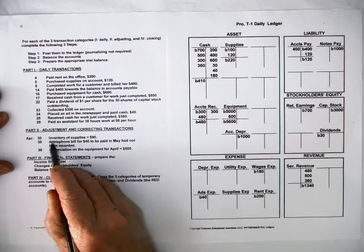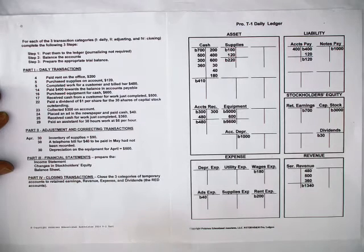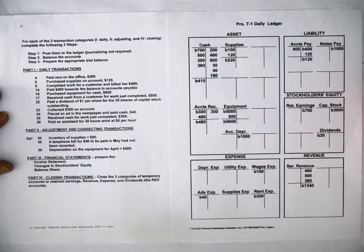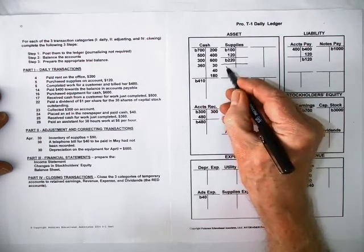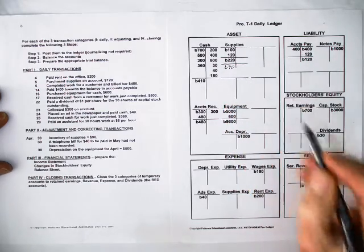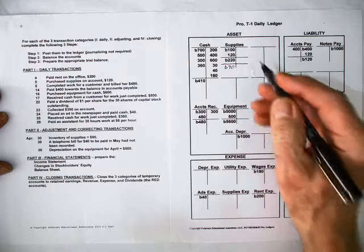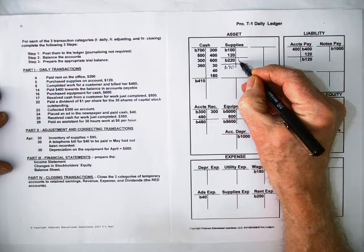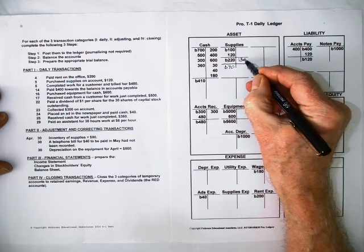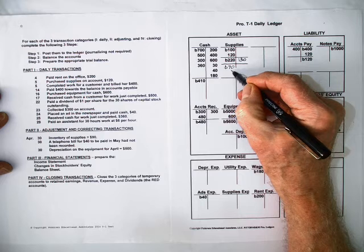Let's start out with our first adjustment. Inventory of supplies is $90. At the end of the accounting period, you went out to your supply room and you took an inventory — you counted the supplies that were left over and you discovered that there were $90 worth on hand. While the current supplies account shows a balance of $220, it should be a balance of $90. So how do we go from $220 down to $90? We credit it. Don't forget, credit means the right side of the account — for $130. When you balance these two numbers, they become the final balance, which is up to date.